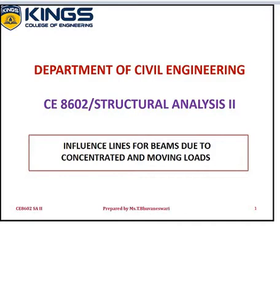First we have to know what is an influence line. It is a graph of the responses of your structure as a function of the position of your downward load moving across the structure. For instance, when a load passes over a structure such as a bridge, one needs to know when the maximum value of the shear, reaction, or bending moment will occur at a point so that the section may be designed.